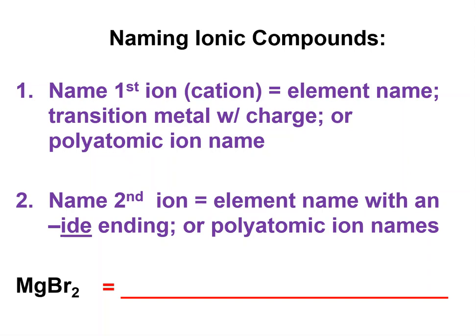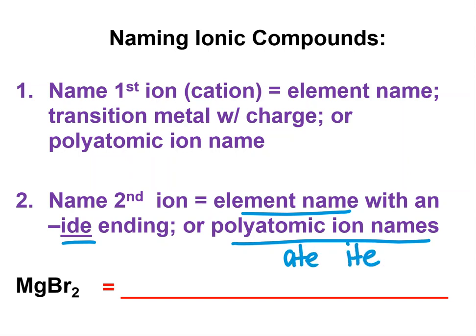When you name the anion, if the anion is just an element — in other words, not a polyatomic ion — then the element will end in "-ide." The ion name will end in "-ide." So that's where you end up with things like sodium chloride, sodium fluoride. But if it has a polyatomic ion, most of those end in "-ate" or "-ite," so just use the polyatomic ion in that case.